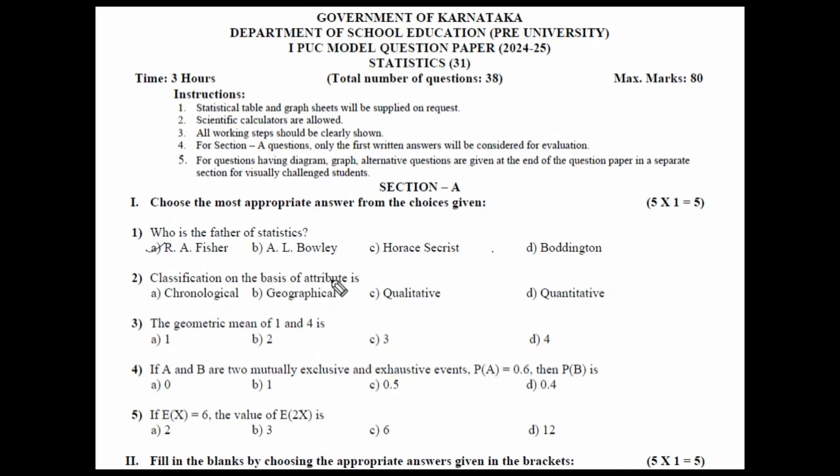Second one is classification on the basis of attribute is called qualitative classification because classification on the basis of area location is called geographical classification. If the classification is based on time, it is called chronology. If the classification is based on variables, then it is called as quantitative and the classification on the basis of attribute is called as qualitative.